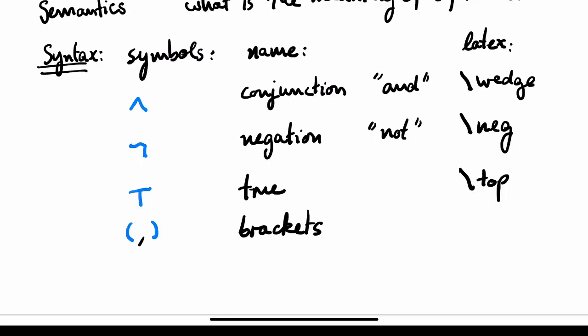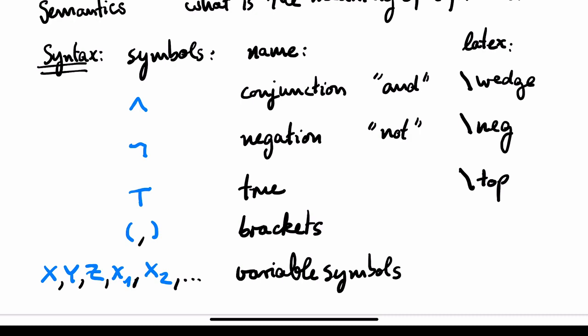And we need variable symbols — arbitrarily many variable symbols, so I can't write them all. But typically I will use capital X, Y, Z, or when I run out of letters, or whenever it is convenient, I put subscripts: X1, X2, and so on.